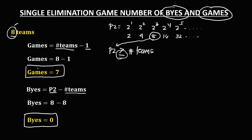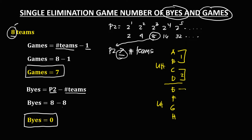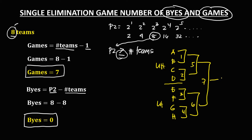For the diagram, we have 8 teams: Team A, B, C, D, E, F, G, and H. Since there are 8 teams, the first 4 teams form the upper half and the last 4 teams form the lower half. This gives us Game 1, Game 2, Game 3, Game 4, Game 5, Game 6, and Game 7. So for 8 teams, we have 7 total games and 0 byes.